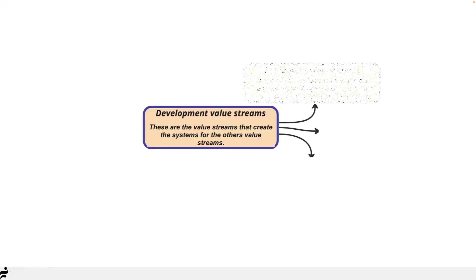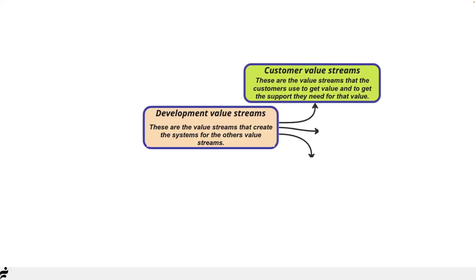Operational value streams are value streams for other people to use. One is the customer value stream — these are value streams the customer uses to get value and the support they need. You don't have just one customer value stream; for a financial company you might have one to check finances, another to register, another to start an account, load money, get money out. These can all be different value streams related to the customer getting value, including the support they receive.